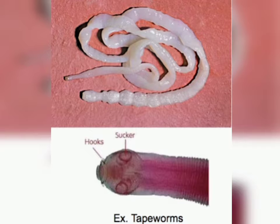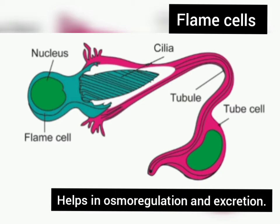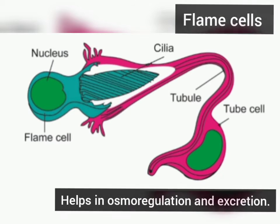Hooks and suckers are present in the parasitic forms. Some of them absorb nutrients from the host directly through their body surface. Specialized cells called flame cells help in osmoregulation and excretion.